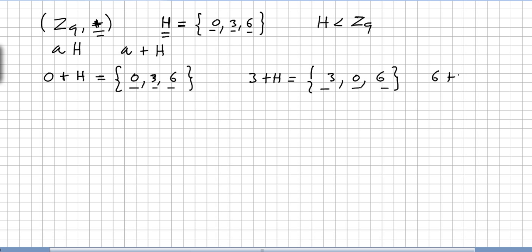And it's easy to check that 6 plus H gives the same set: 6+0=6, 6+3=9 mod 9=0, 6+6=12 mod 9=3. So these three cosets — 0+H, 3+H, and 6+H — are all the same.